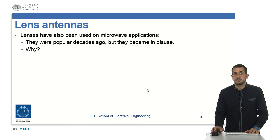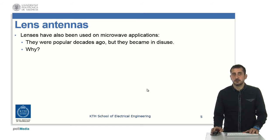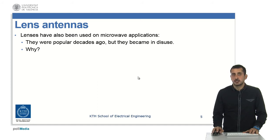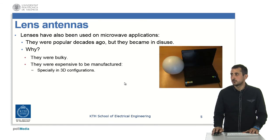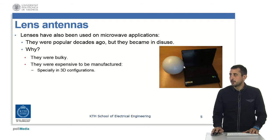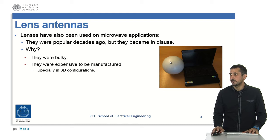Although these antennas were used a lot in the optical spectrum, they were not very much used in the microwave frequency band, even if they were popular some decades ago. The question is: why were they not having this massive use in microwave applications? The answer is that they are bulky. Here we have a photograph of a Luneberg lens at KTH. As you can see, it is bulky. This one is designed for 12 GHz, but at lower frequencies this lens has to be larger. So they are expensive and bulky, particularly in 3D configurations.